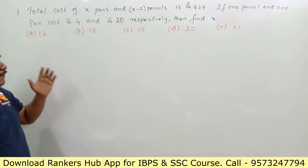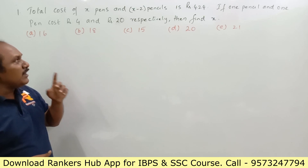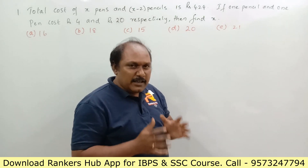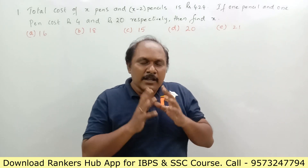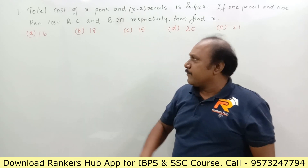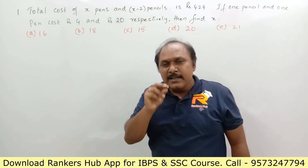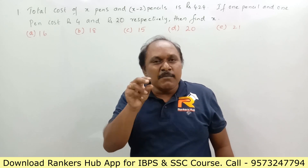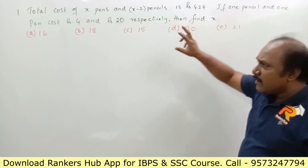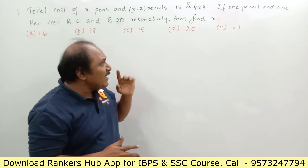Now let us look into the first question. The total cost of x pens and x minus 2 pencils is rupees 424. If one pencil and one pen cost rupees 4 and rupees 20 respectively, then find x. So the number of pencils are 2 less than the number of pens, and the total cost is 424, with each pencil costing 4 rupees and each pen costing 20 rupees.